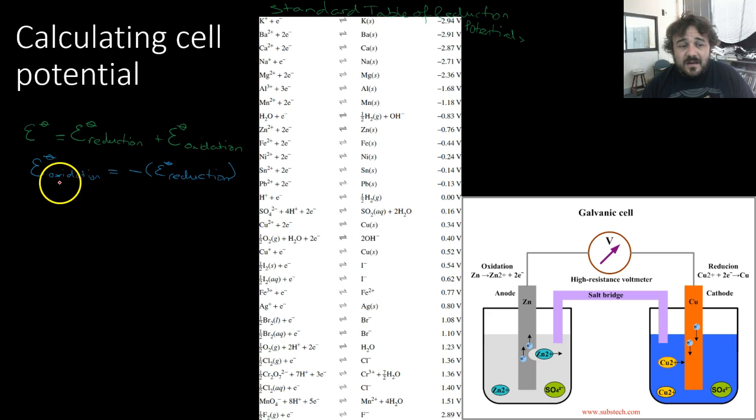Now, the E0 oxidation, the way you work it out using this table, is you reverse the sign of the E0 reduction. So, just say that tin, that Sn is tin, in whatever cell we're going to set up, it is oxidized, which means we go from Sn2 plus plus minus, which means that becomes a plus. Plus 0.14 volts.